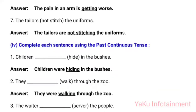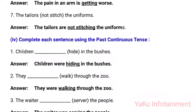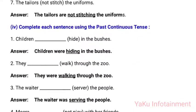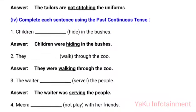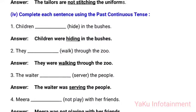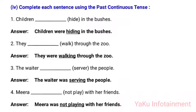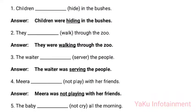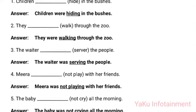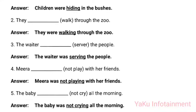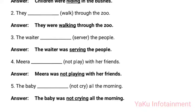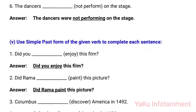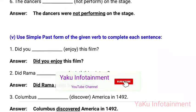Complete each sentence using the past continuous tense: (1) Children were hiding in the bushes. (2) They were walking through the zoo. (3) The waiter was serving the people. (4) Mira was not playing with her friends. (5) The baby was not crying all the morning. (6) The dancers were not performing on the stage.